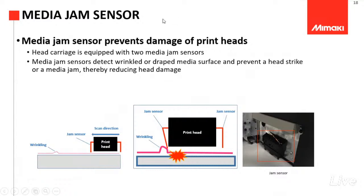Terus ada media jam sensor-nya. Media jam sensor ini penting banget karena kalau misalkan kita punya bahan, terus bahannya nanti mengerut dan nabrak ke print head — kan itu bahaya, bisa menyebabkan print head kita menjadi cepat rusak. Dengan adanya media jam sensor ini, bisa membuat print head lebih terjaga sehingga umur print head bisa jadi lebih awet.